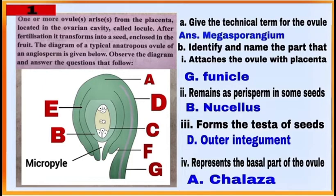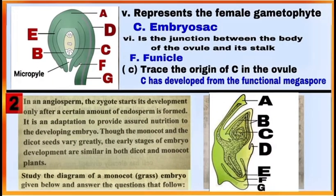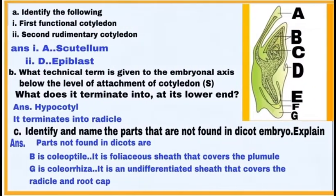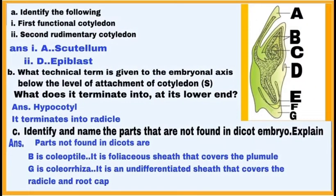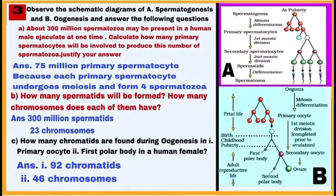Study the anatropous ovule diagram and answer questions A, B, and C. This is the second case-based question; it is on the embryo of a monocot plant — grass. Here are questions A, B, and C of the second case-based question.